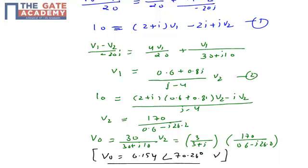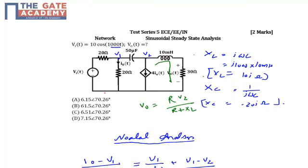So my V0 will be equal to 6.154 with angle of 70.26. So my correct option will be option A. Thanks.